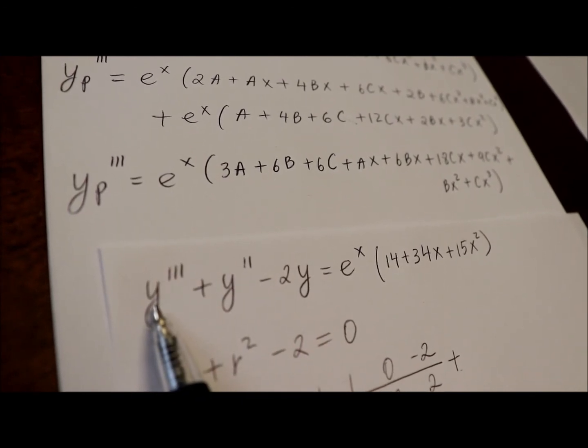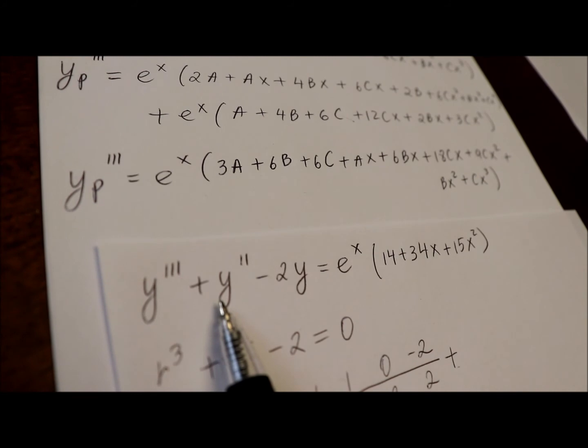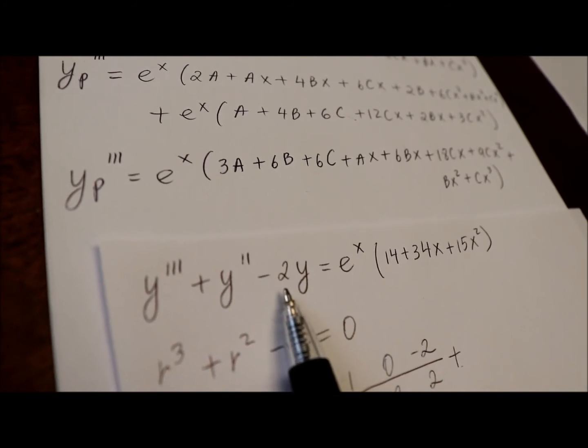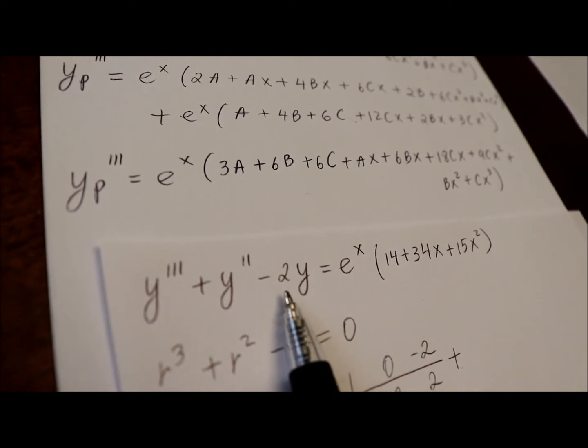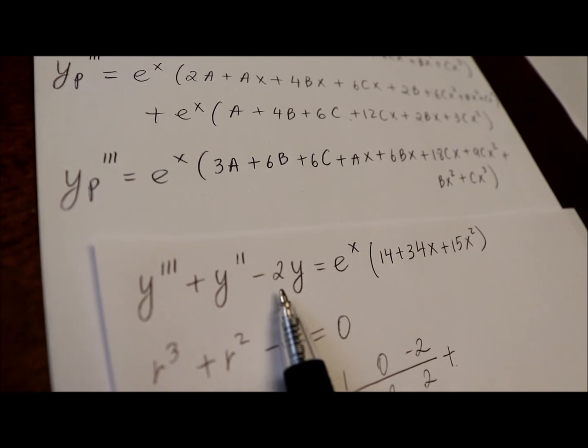when you copy it very carefully, there is no coefficient in front of y third derivative and y second derivative. But there is a negative 2 in front of y, so multiply each term in y particular by negative 2.